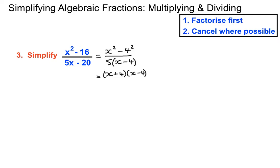Once we can express something as first term squared minus second term squared, we get a bracket with each of those terms with a plus in between and another bracket with a minus in between — that's the difference of two squares rule. We've got common brackets: x minus 4 goes into the bottom once and into the top once, cancelling that bracket. We're left with x plus 4 on the top and 5 on the bottom. Quite a bit of work there with that special difference of two squares technique.